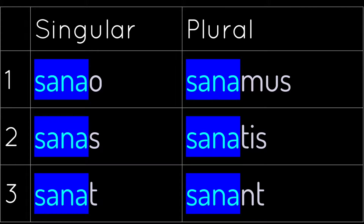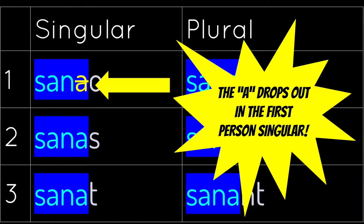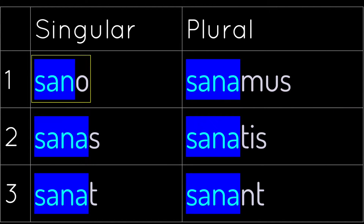That first person singular form should look a little odd to you, and that's because that -a does not remain. There's definitely a hierarchy of vowels in Latin, and that long -o is stronger than the long -a, so the -a is going to drop off, and we're going to be left with sano.